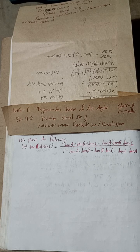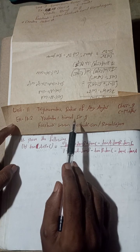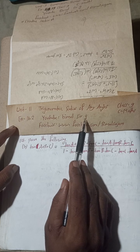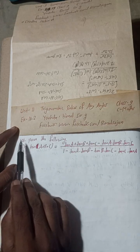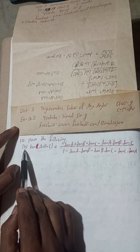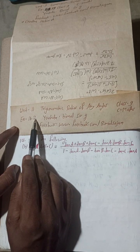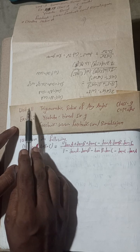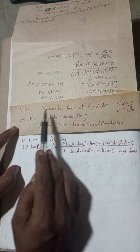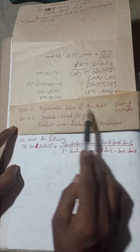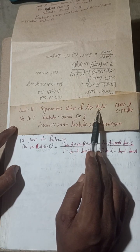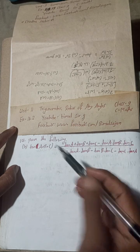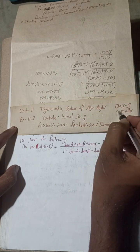Radhe Radhe Jaya Sri Krishna. Class 9 and 10 students, welcome back to Vimal Sarji YouTube channel. This is question number 14B of exercise 11.1 and 11.2, unit 11: Trigonometric Ratios of Angles — class 9 optional maths, not compulsory math.